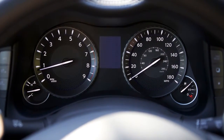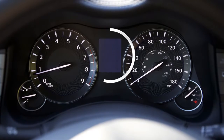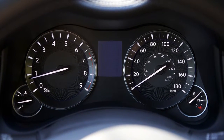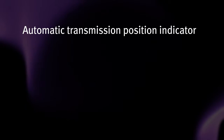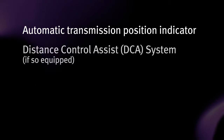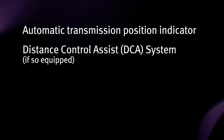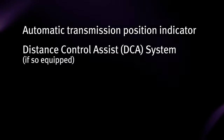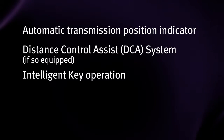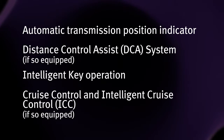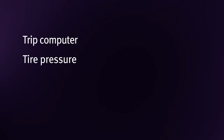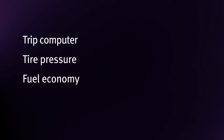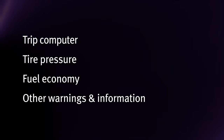Located between the vehicle speedometer and tachometer is the vehicle information display. It displays operational information such as automatic transmission position indicator, distance control assist DCA system if so equipped, intelligent key operation information, cruise control and intelligent cruise control ICC if so equipped, trip computer information, tire pressure information, fuel economy, and other warnings and information.